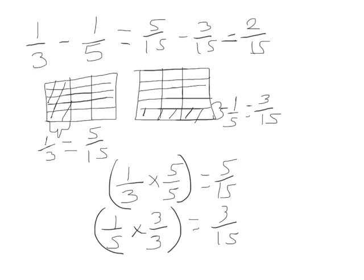When we do this numerically, we get the exact same results: 5 fifteenths take away 3 fifteenths, as we got with our rectangular fraction model. So we're going to move away from the models and into finding our answers numerically.